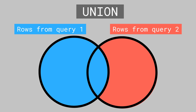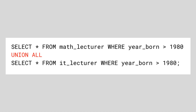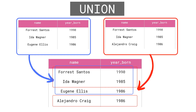Union all does not get rid of duplicates — lecturers that teach both maths and IT were shown twice. To get rid of duplicated rows we have to use union instead of union all. Union takes all the rows from the first query plus all the rows from the second query but eliminates duplicates so that each unique row is shown only once. All we have to do is change union all to union in our query. If we now run it, Forrest Santos and Ida Wagner are each shown only once. That's the only difference between union all and union.